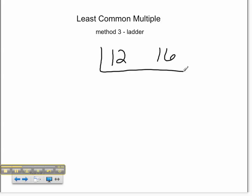A common factor of 12 and 16 would be, hmm, I can think of 4. 4 goes into 12 3 times. 4 goes into 16 4 times. Is there a common factor of 3 and 4?